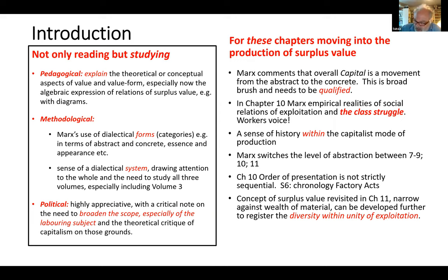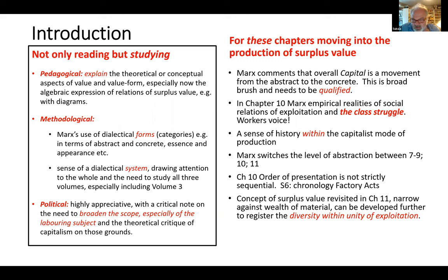Up to now when we've talked about history and capitalism it's been quite broad brush — the becoming of capitalism, the genesis of the capitalist mode of production. What we'll see in these chapters is a strong sense of history within the capitalist mode of production, especially in the context of England in the first half of the 19th century. Marx is switching his level of abstraction: Chapters 7 to 9 are general and fairly abstract, whereas Chapter 10 will be much more narrative in style.